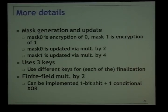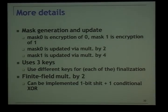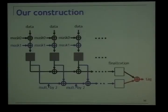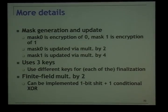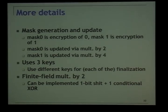All the extra operations outside the block cipher are finite field multiplication by two or four, where multiplication by four is just multiplication by two done twice. The construction uses three keys: one for the internal PMAC iteration and two keys for the finalization. Finite field multiplication by two can be implemented very efficiently — it's just a one-bit shift plus one conditional XOR — so it is very efficient.